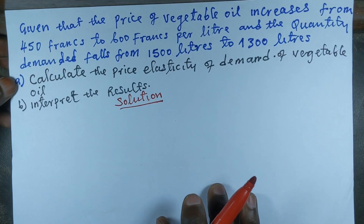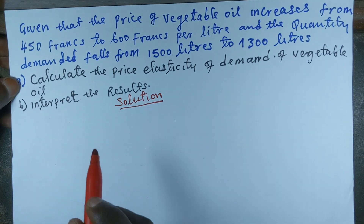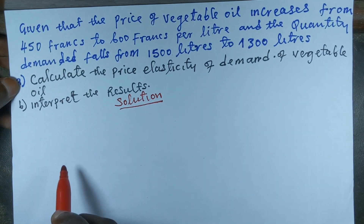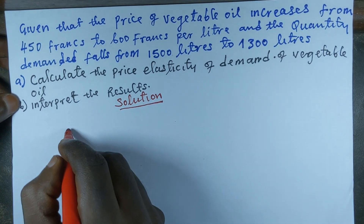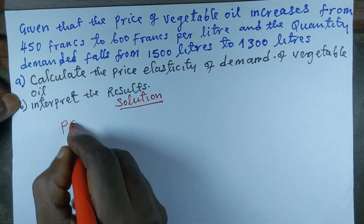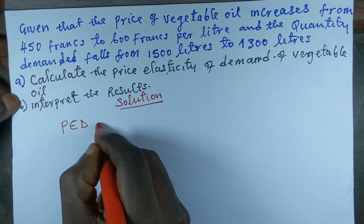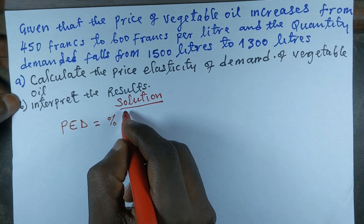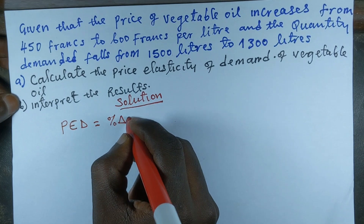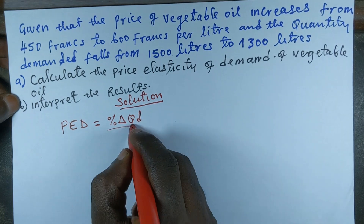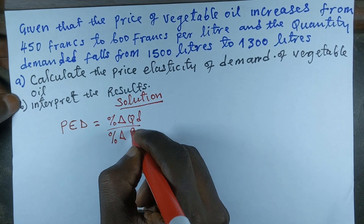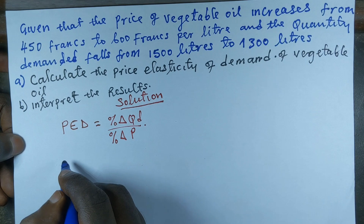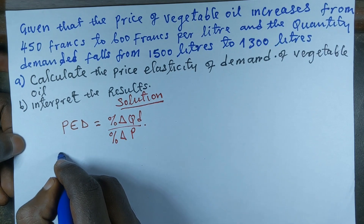The first thing we need to do is state the formula. In this situation, we're going to use the percentage method of calculating price elasticity of demand. So PED, that is price elasticity of demand, is equal to percentage change in quantity demanded over percentage change in price.